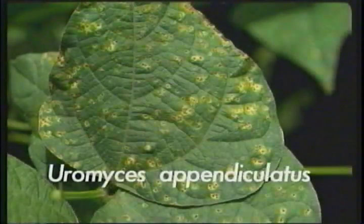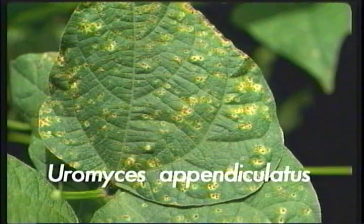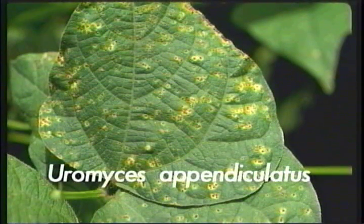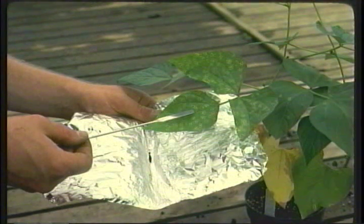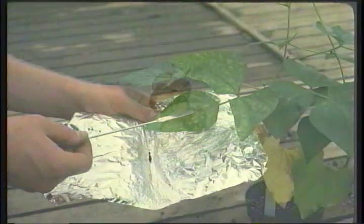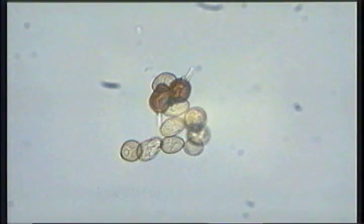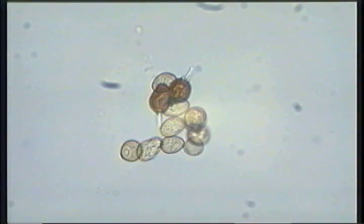Bean rust is caused by Euryomyces appendiculatus and the pathogen only infects beans. The organism can be recovered from plant parts and spore stages such as uridiniospores and teleospores observed microscopically.